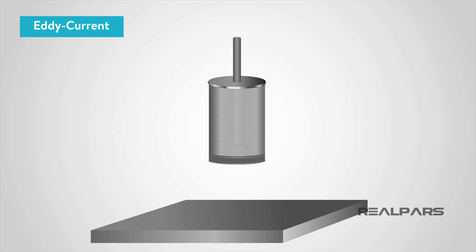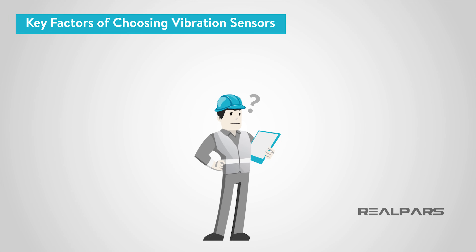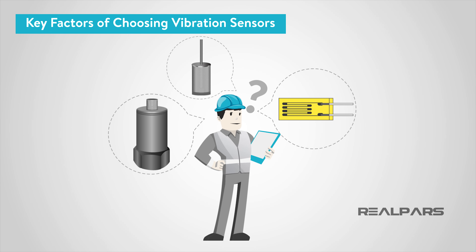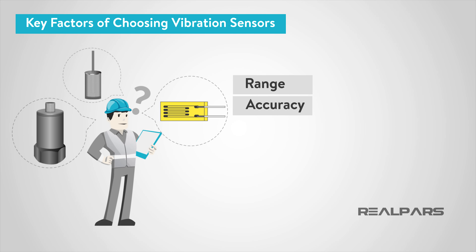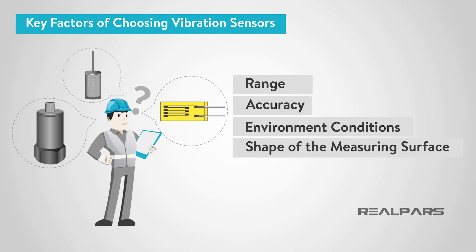When using eddy current sensors, it's important for the component to be at least three times larger than the sensor diameter for normal operation. Otherwise, advanced calibration would be required. When choosing a vibration sensor for your application, it's important to look at factors such as range and accuracy, environmental conditions, and the shape of the measuring surface.